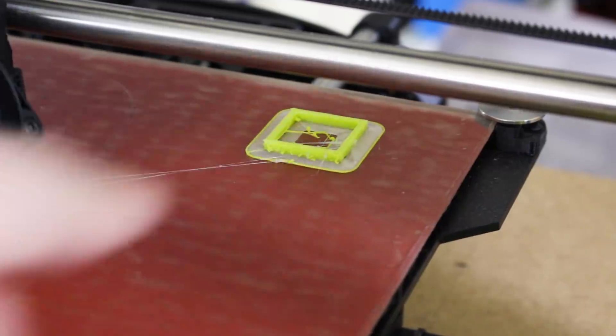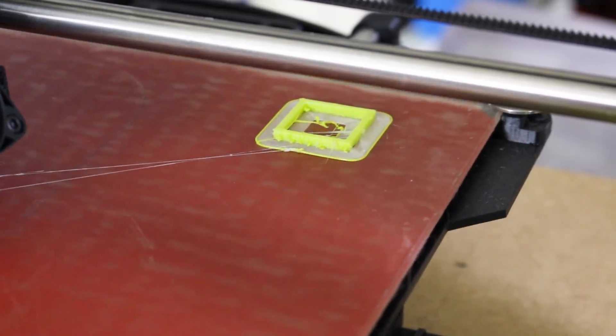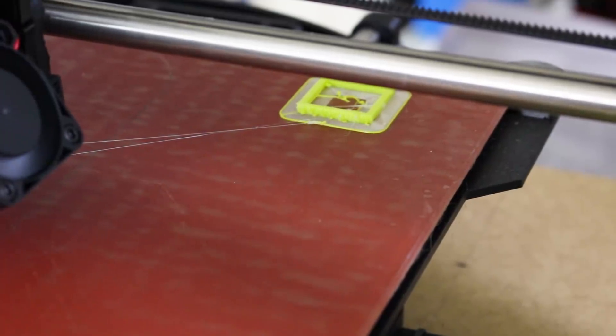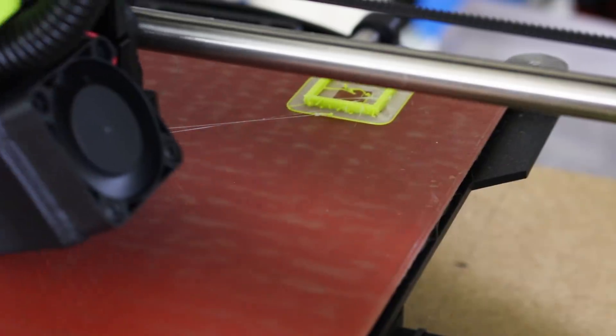And what it seems to have done with this wipe tower is just printed the PLA material, so it's actually wiping the other nozzle as it does it, and the other nozzle cools down as it does it, so basically that wipes all the ooze off and stops it oozing while it's printing with the PLA.